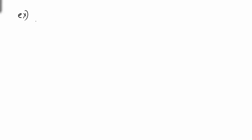I'm going to show you several different ways. If matrix A is equal to [1, 2, 3, 7], I'm going to show you how to do this a couple of different ways. I'll show you one way so you can see the steps, then I'll show you a little bit easier way, and then we're going to actually use the calculator.